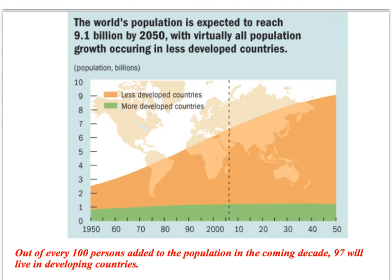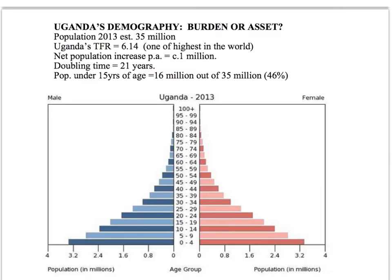This graph shows what is projected to happen to the world's population by the middle of this century. The projection is that by 2050 we're going to have a population in excess of 9 billion, and most of that population growth is going to happen in developing countries. Sub-Saharan Africa is where we see the population growing the fastest — Uganda, for example, currently has a population of about 35 million, growing at about a million people per year, with an estimated doubling time of 21 years.